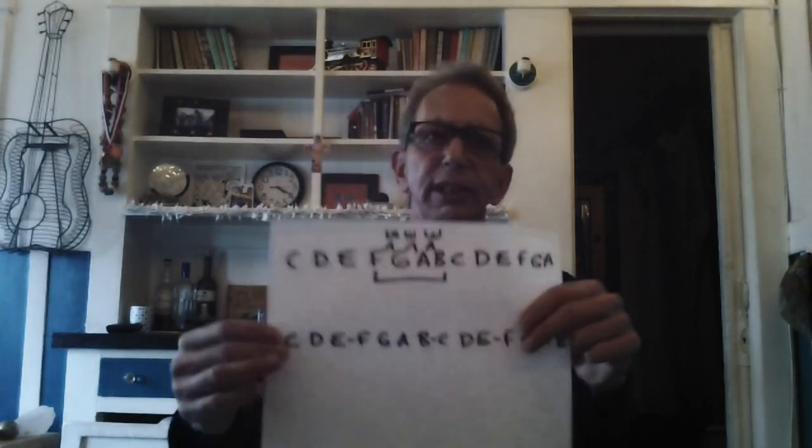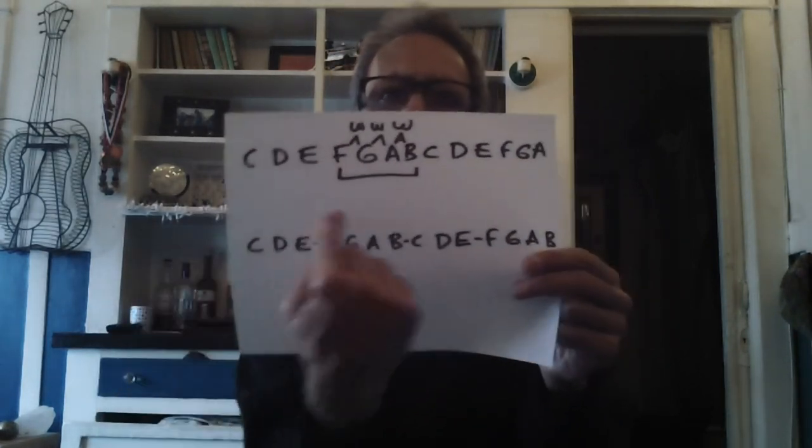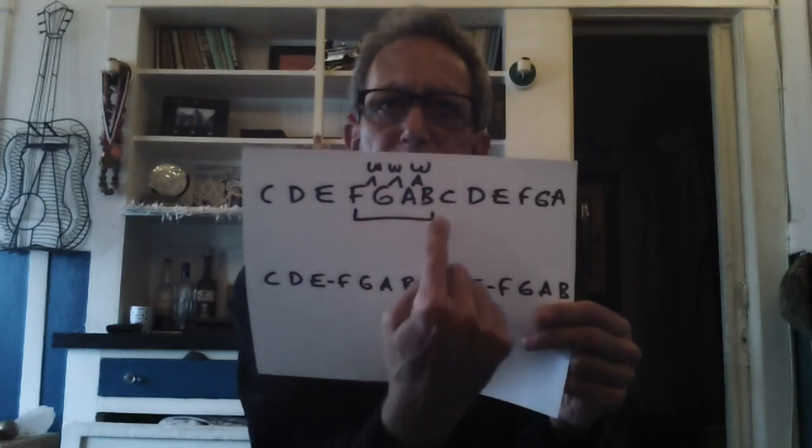There's an interval inside of the dominant seventh chord that you will not find inside of a major seven or a minor seven chord. It's a very unique and probably one of the most tense intervals in music, and it's called the tritone. Why is it called a tritone? Because it consists of three whole steps within a scale. In the key of C, there are three whole steps between F and B.